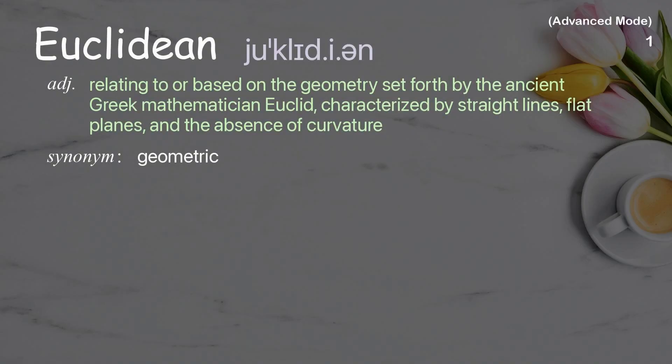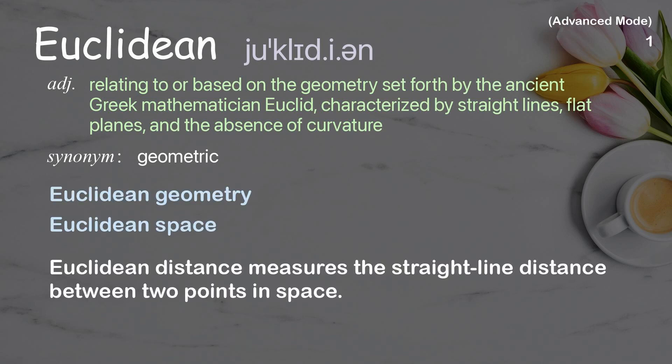Euclidean: relating to or based on the geometry set forth by the ancient Greek mathematician Euclid, characterized by straight lines, flat planes, and the absence of curvature. Examples: Euclidean Geometry, Euclidean Space. Euclidean Distance measures the straight line distance between two points in space.